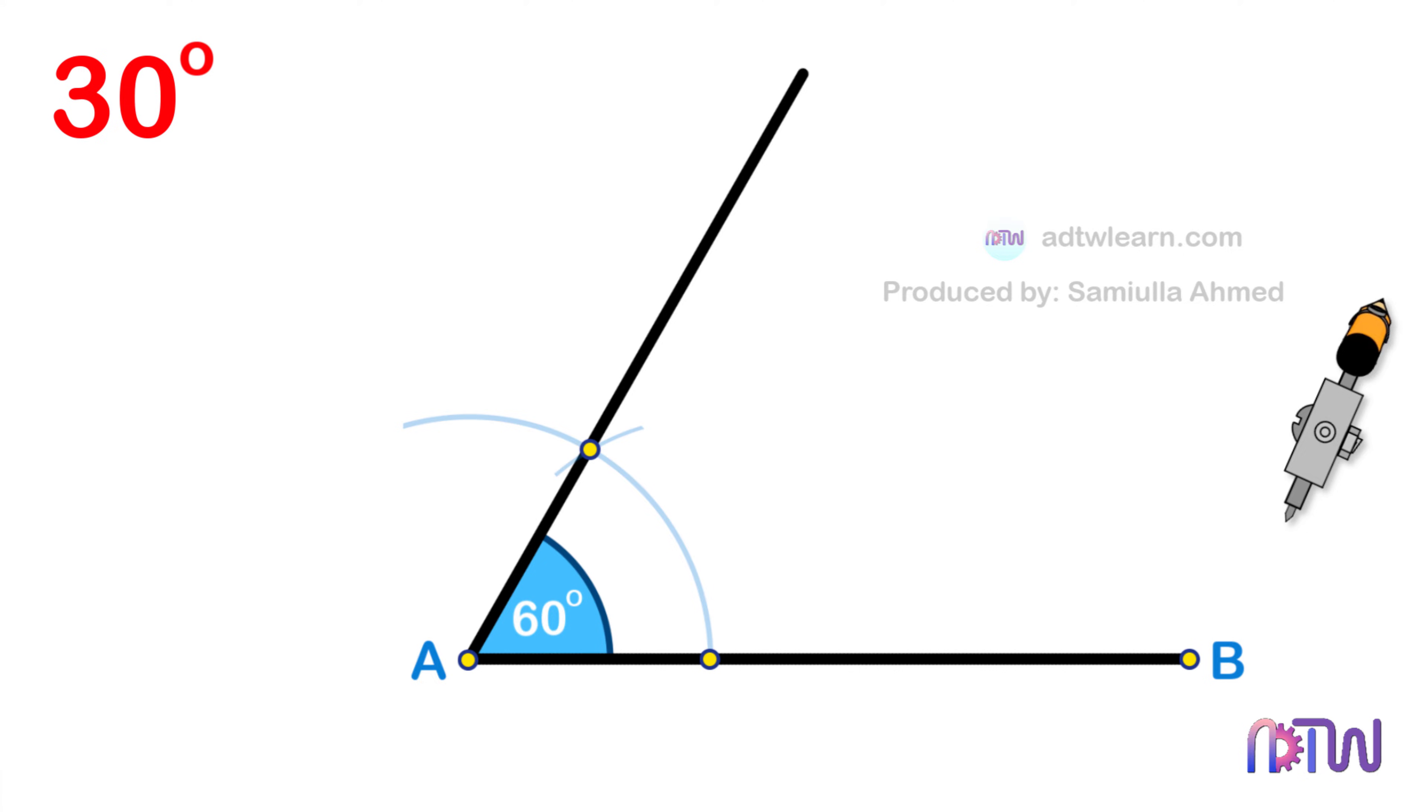To get the 30 degree angle, we need to divide this angle into half. To do so, take a compass, and using these two intersection points as centers, cut another arc as shown.